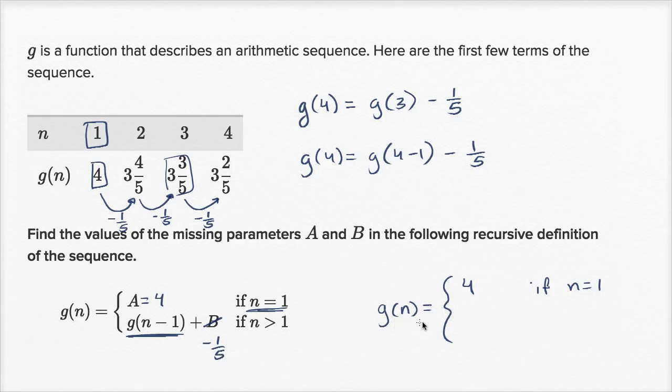So we could say g of n is equal to g of n minus one, the term right before that, minus one-fifth if n is greater than one. But for the sake of this problem, we see that A is equal to four and B is equal to negative one-fifth.